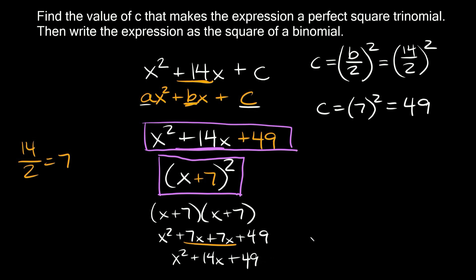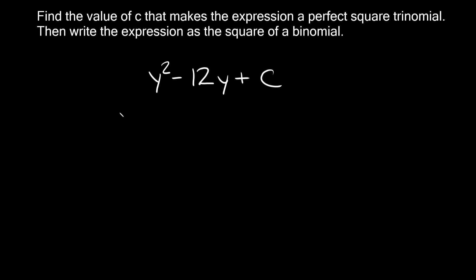Hopefully that wasn't too bad, let's just try one more example. Here's the next one. So we're given y squared minus 12y plus c. Again we're just trying to figure out what c is to make this a perfect square trinomial.